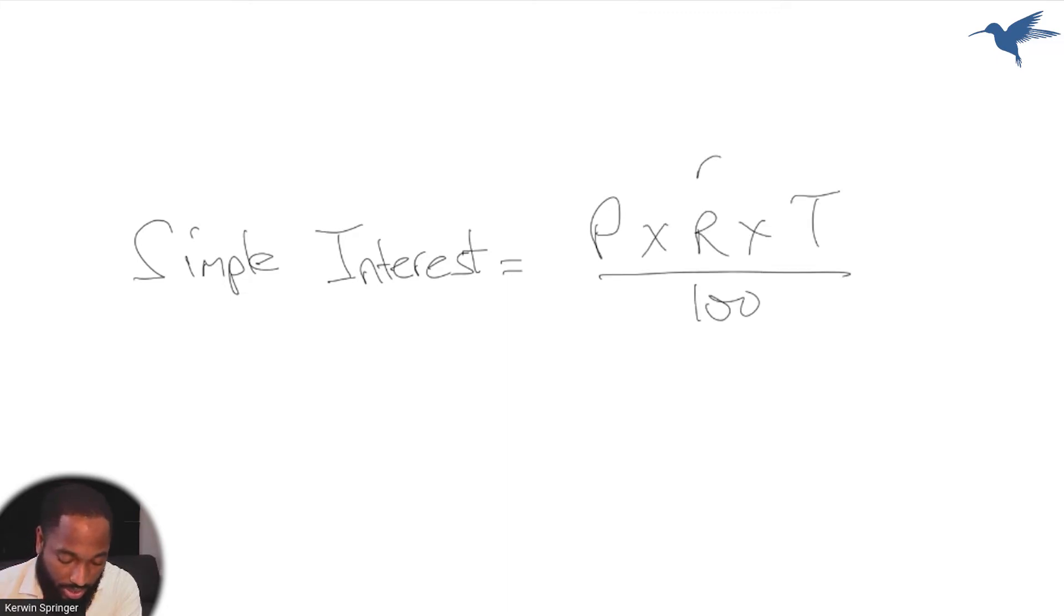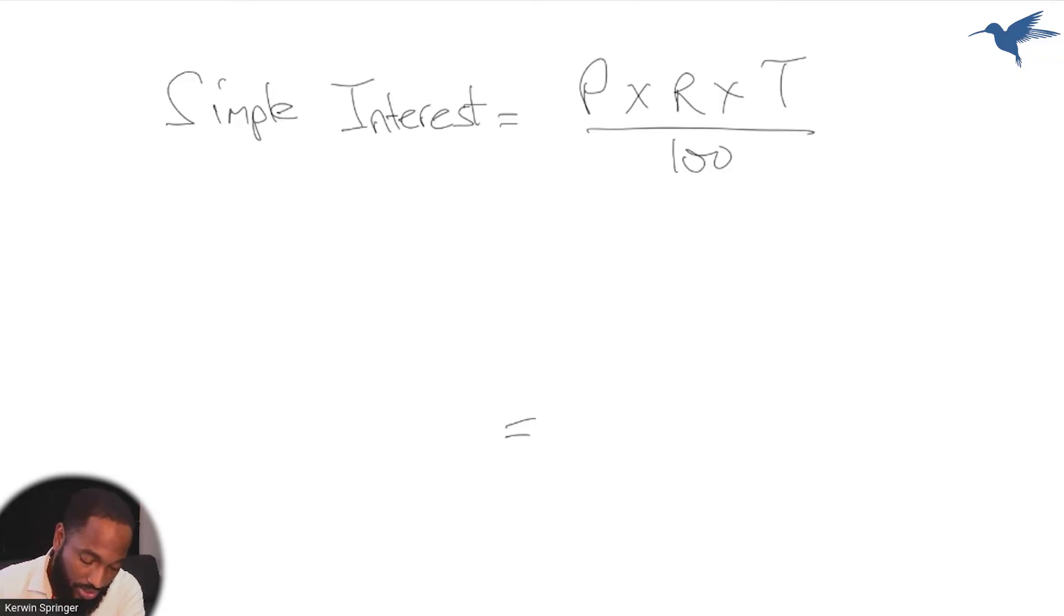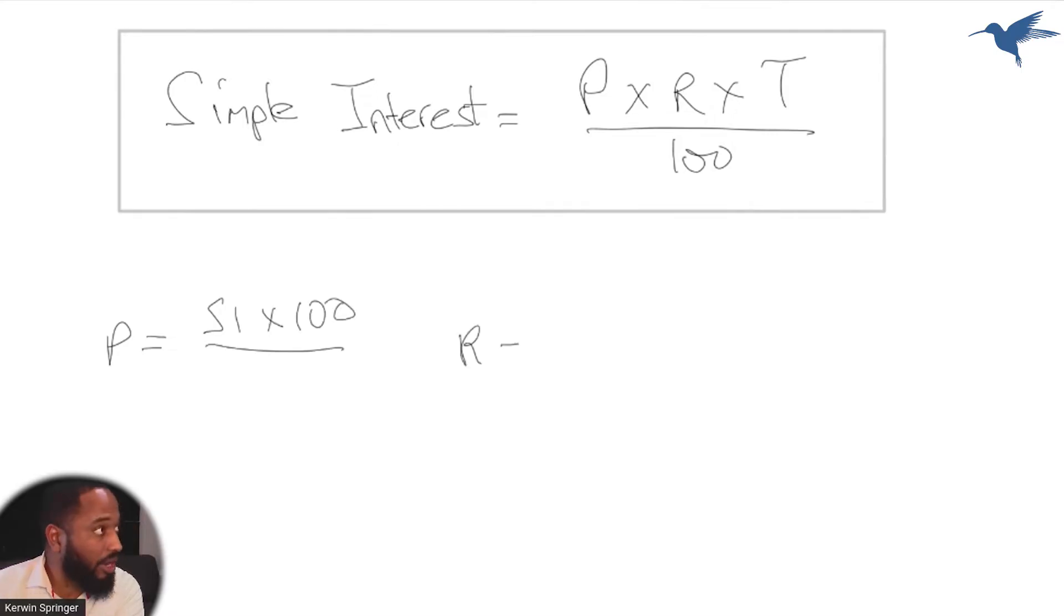We sometimes write this as P × R × T divided by 100. Some books have a capital. By rearranging this one formula to rule them all, we can also acquire formula for principle, which is simple interest times 100 divided by something. We can acquire formula for rate, which is simple interest times 100 divided by something.